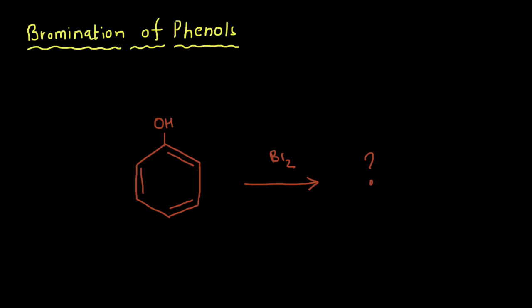Bromination of phenols is a classic example of electrophilic substitution reactions, and it was also one of the common intermediate steps in a lot of synthesis reactions. Let's check out how bromination happens in the case of phenols.